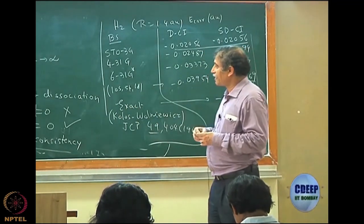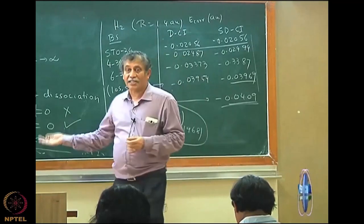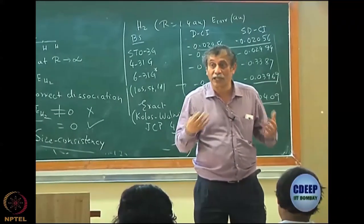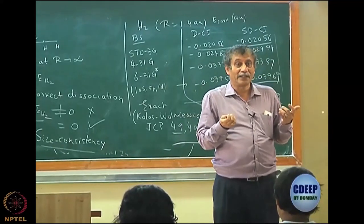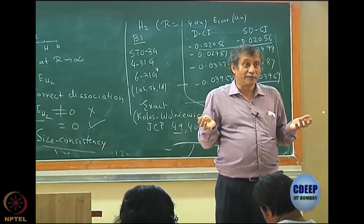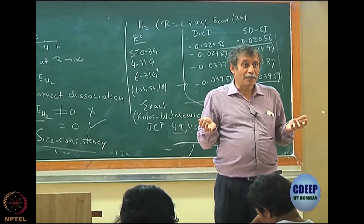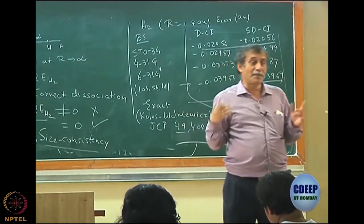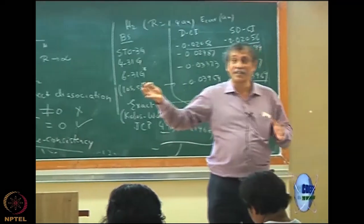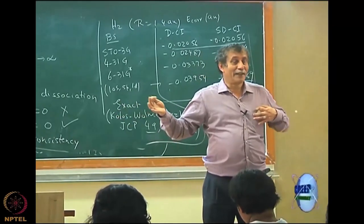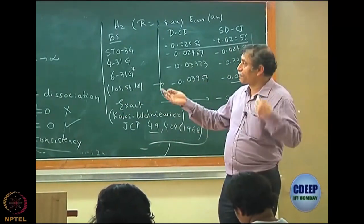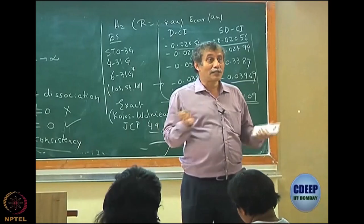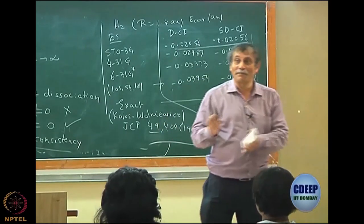In the next class we will discuss why DCI is not size consistent, what the physical effects are, and how to include them — only then can we improve the theory. Perturbation theory is good in terms of size consistency but it is not variational. And interestingly, coupled cluster is also not variational — as soon as you are variational, you have a problem with size consistency.